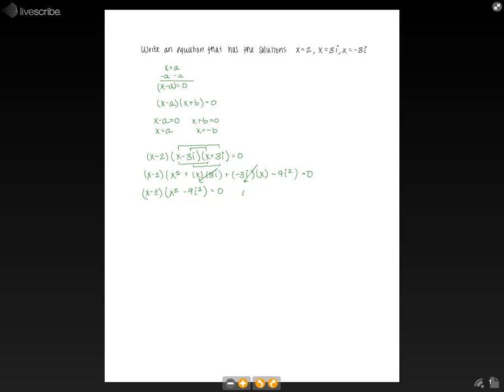Now that we know that i squared is equal to negative 1, we can plug that in and simplify even further, and we get x minus 2 times x squared plus 9 equals 0.